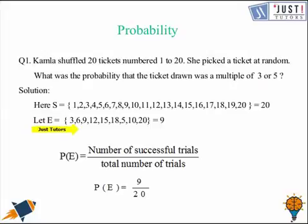So these are 3, 6, 9, 12, 15, 18, 5, 10, 20. So the total number of events or the successful trials are 9. So we write it as numerator and the total number of trials is 20. We write it as denominator. So this is the probability that we have a ticket drawn either a multiple of 3 or a multiple of 5.